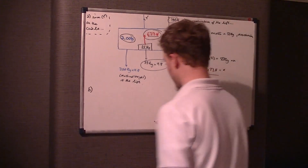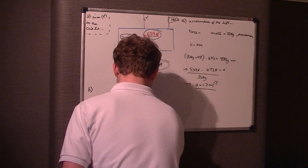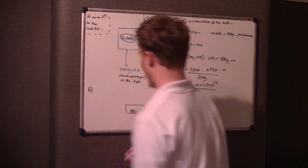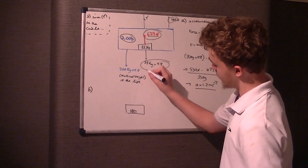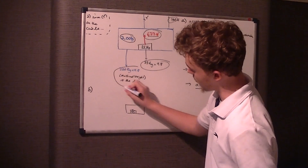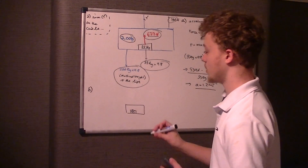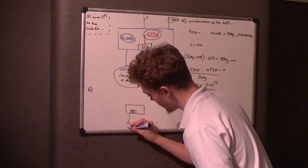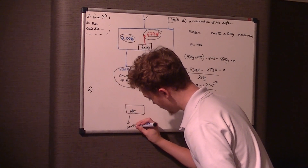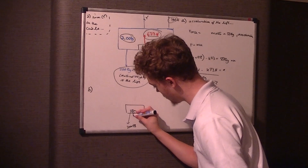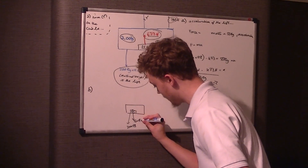I'm going to draw another box to represent the lift with a little box inside representing 55 kilograms. We've got 200 times 9.8 — the weight of the lift — and obviously the weight of the box pulling it down as well, which is 55 kilograms times 9.8.